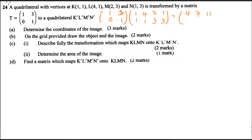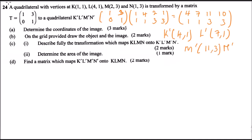One times one is one plus nine gives ten. The second row is easy because the matrix row is [0,1], so the second row of the coordinate matrix repeats itself. This means K' is at (4,1), L' is at (7,1), M' is at (11,3), and finally N' is at (10,3). That is how you get the coordinates of the image.